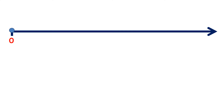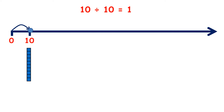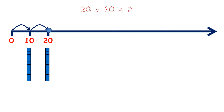Now we're going to learn our division facts for the 10 times table. 0 divided by 10 is 0. 10 divided by 10 is 1. 20 divided by 10 is 2.